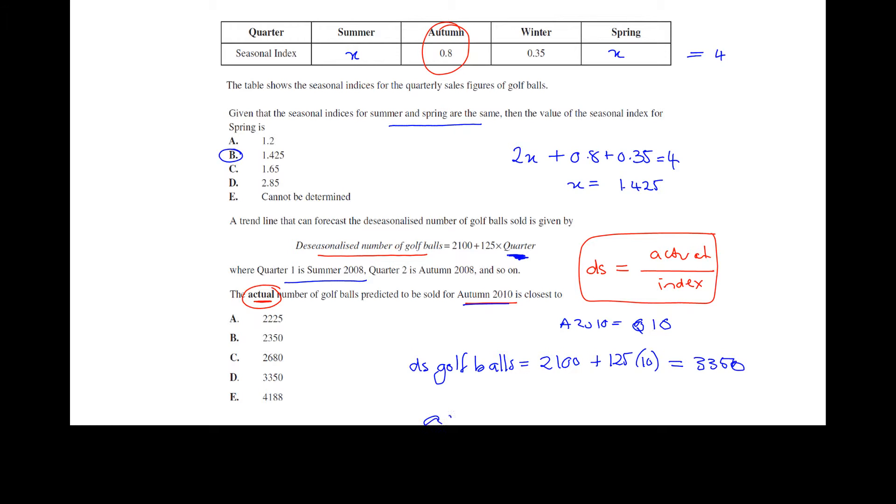So my actual will be 3350 times my index of 0.8 or I can sub it into the formula above and solve for the actual value. Okay and I end up there with 2680 and so the answer is C.